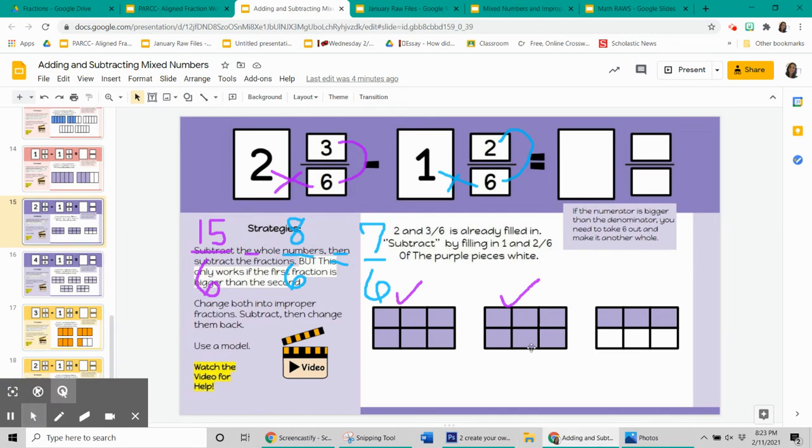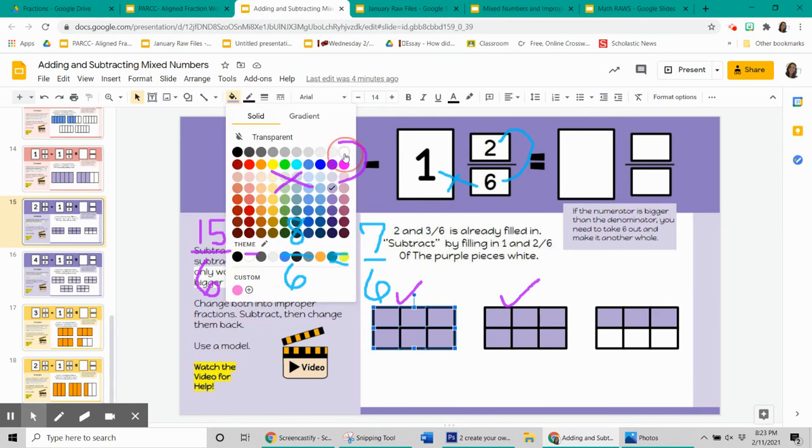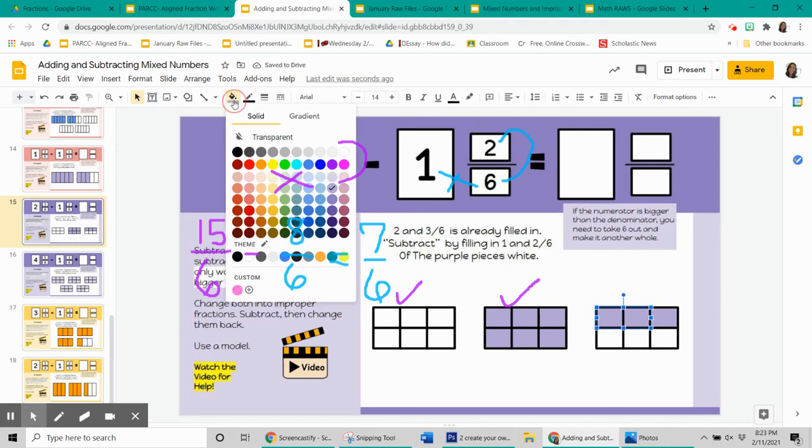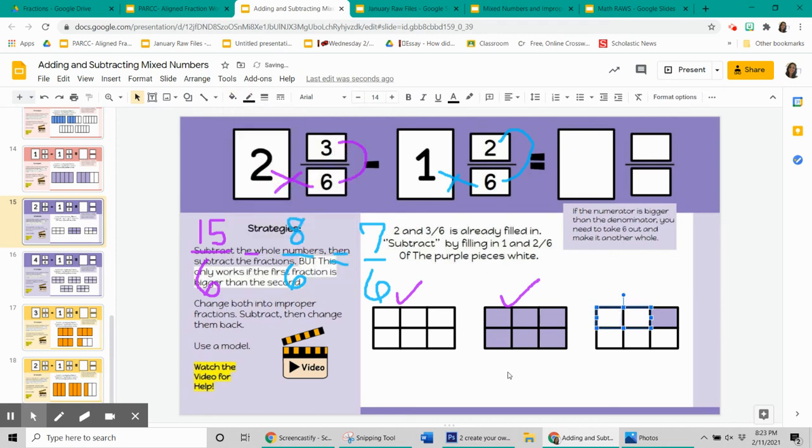by doing our subtraction with the models. So when you take away 8 sixths, or you take away 1 and 2 sixths, let's go ahead and do that. So I'm going to take away 1 and 2 sixths. When you take that away,